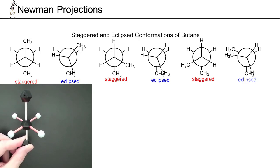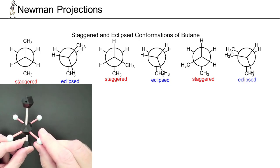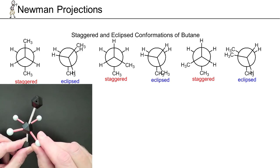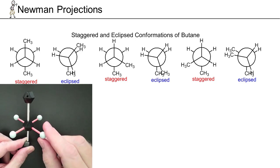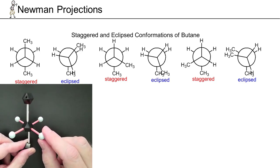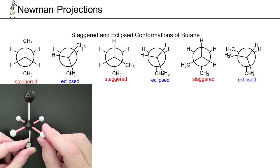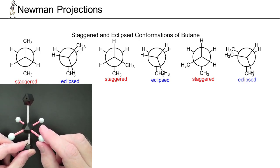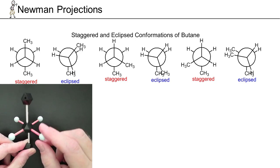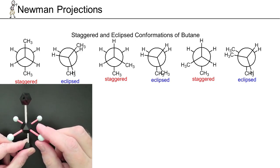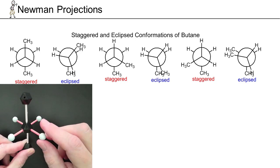There's an infinite number of possible conformations because we can rotate one degree at a time. Out of that infinite number, we only really draw six of them — the high energy and low energy extremes. The staggered conformations are the lower energy extremes. We're going to start rotating 60 degrees at a time until we get back to the anti-conformation.